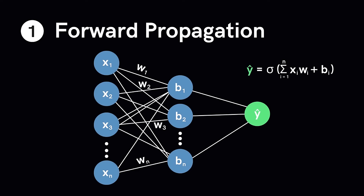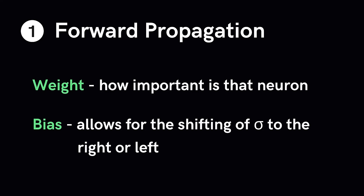The weight of a neuron tells us how important the neuron is — the higher the value, the more important it is in the relationship. The bias is like the neuron having an opinion about the relationship; it serves to shift the activation function to the right or to the left. If you've had experience with high school math, you'll know that adding a scalar value to a function shifts the graph either left or right — and that's exactly what the bias does.